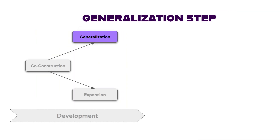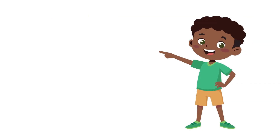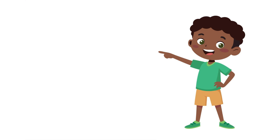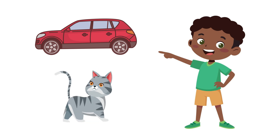With the Generalization step, we work on the expression of increasingly specific messages more frequently, in more contexts, and with more partners. Jamal had gotten very good at communicating the word 'go' when he wanted to leave. Now that we are generalizing, we are working on using 'go' in other contexts and with other people — for example, using 'go' when communicating about a car leaving a parking lot, or a pet leaving the room.